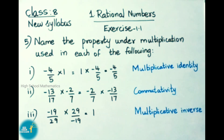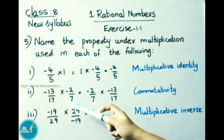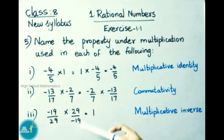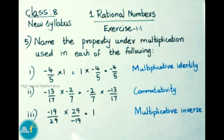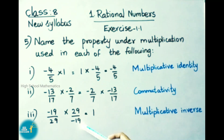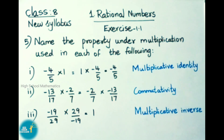See the third one: -19/29 × 29/-19 = 1. Here -19/29 is written, so its inverse is 29/-19, and the product equals 1. So the property used here is the multiplicative inverse property.